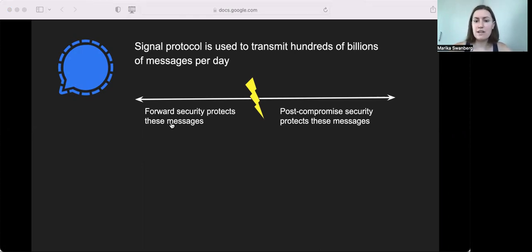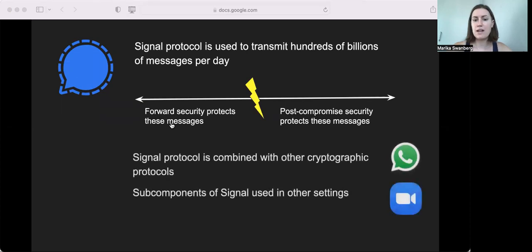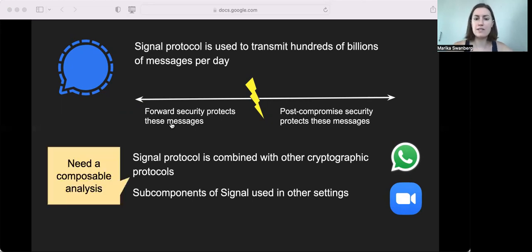In a number of settings, the Signal protocol is combined with other cryptographic protocols, or parts of it are repurposed for other applications. So in order to understand the security guarantees of Signal in these various settings, we need a composable security analysis.